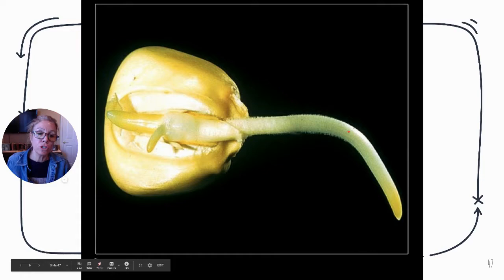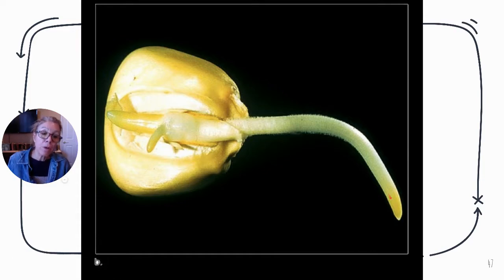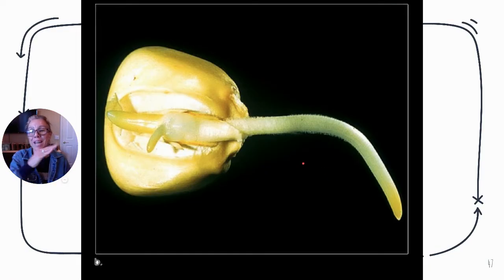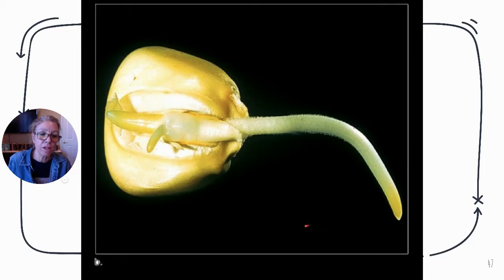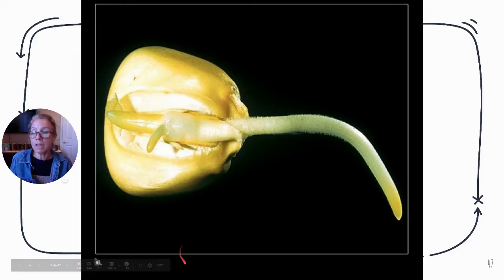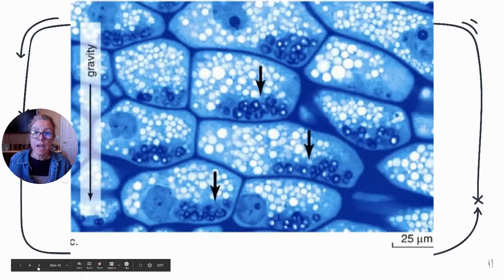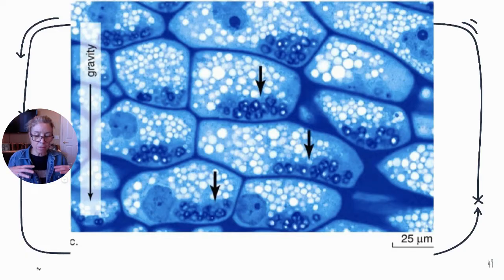In gravitropism, shoots respond negatively — growing away from gravity — while roots respond positively, growing toward gravity. In roots there are organelles called amyloplasts that contain statoliths, which settle to the bottom with gravity and signal that downward growth. That is how roots detect and respond to gravitational direction.